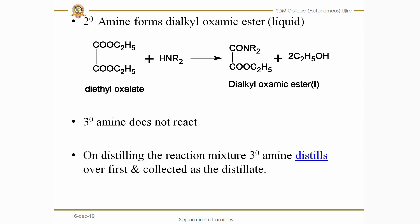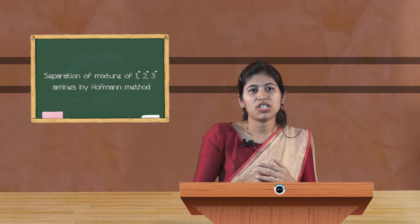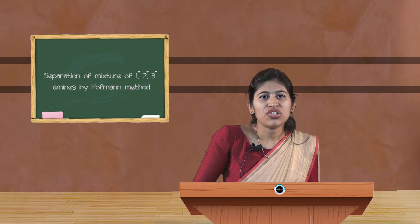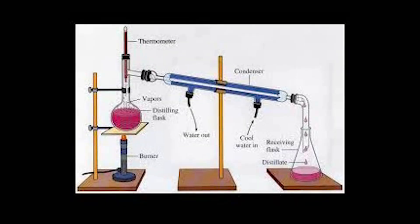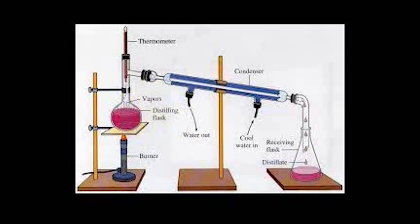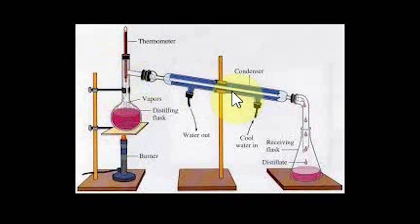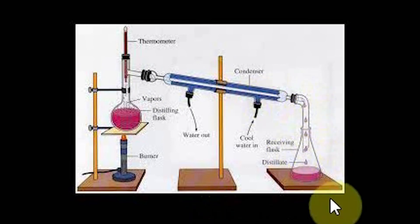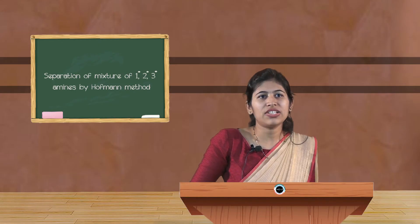When the three products — primary amine product, secondary amine product, and unreacted tertiary amine — are subjected to distillation, the tertiary amine is the most volatile and is collected as the distillate at the beginning. As you can see in the distillation apparatus shown, the tertiary amine vapors pass through, get condensed, and are collected in the conical flask, giving us pure tertiary amine.